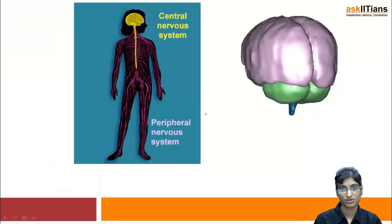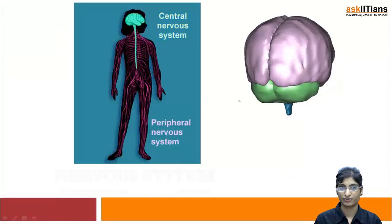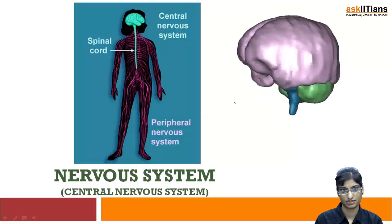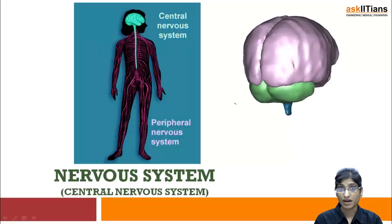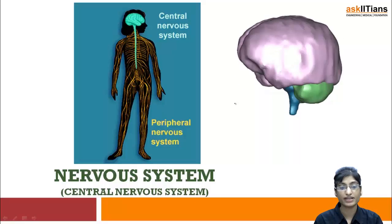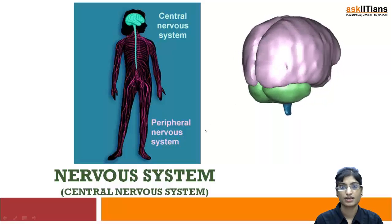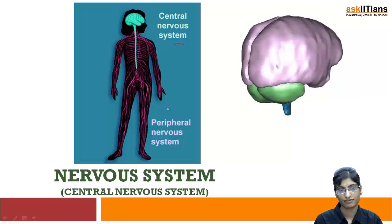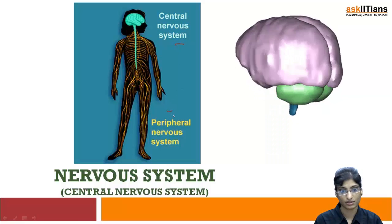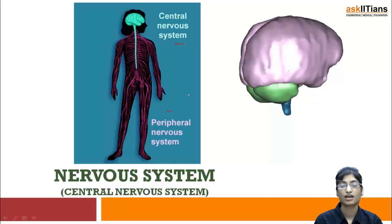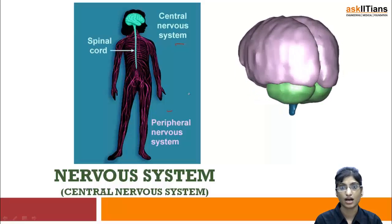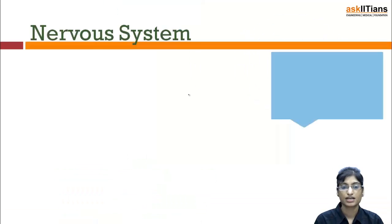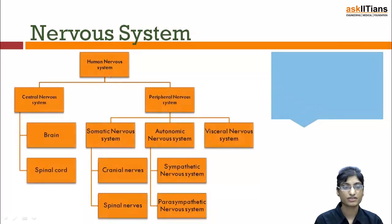In this image you can see the 3D structure of the brain and body showing the nervous system. We are going to specifically learn about the central nervous system. The human nervous system is of two types: central nervous system and peripheral nervous system.